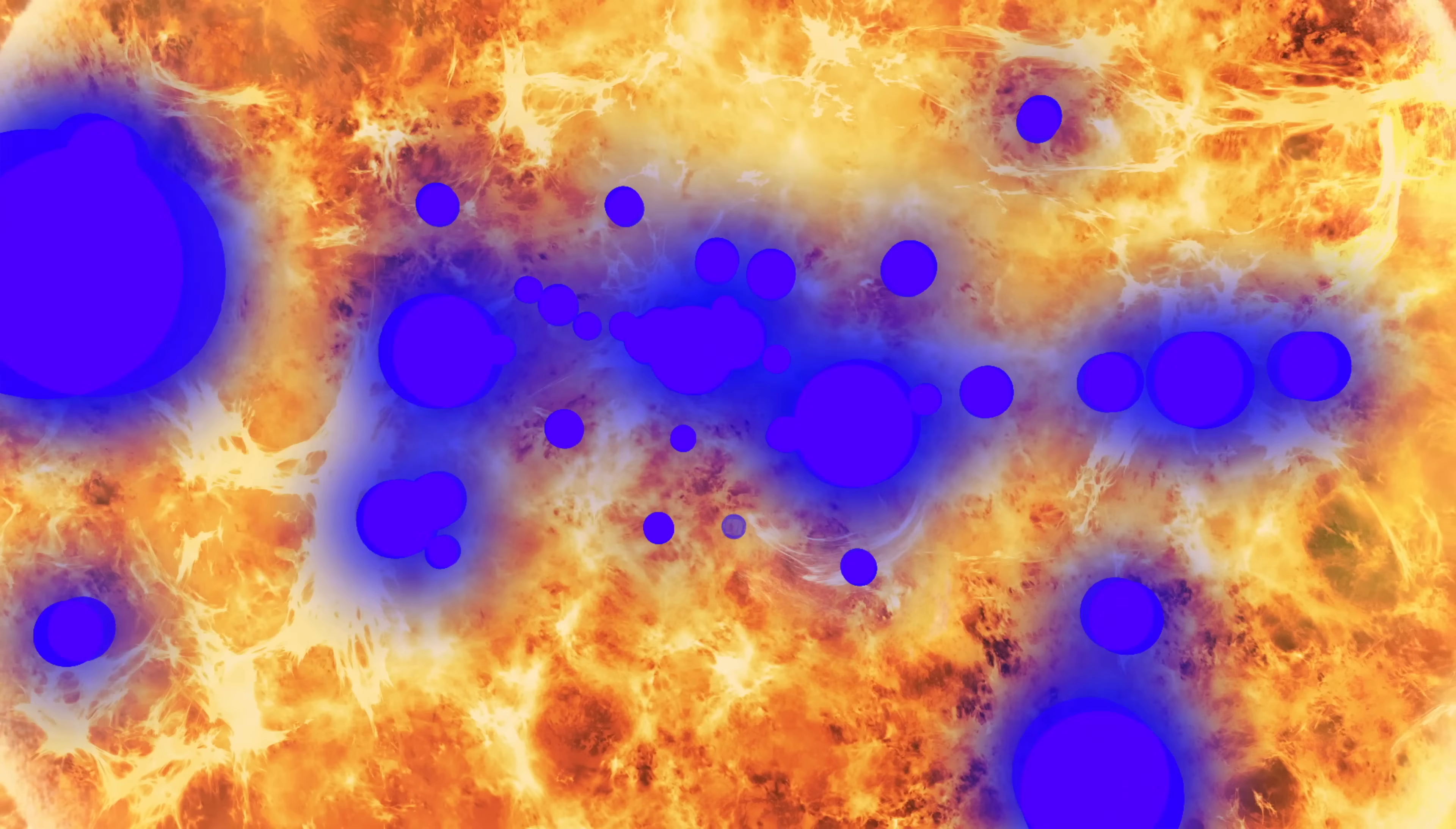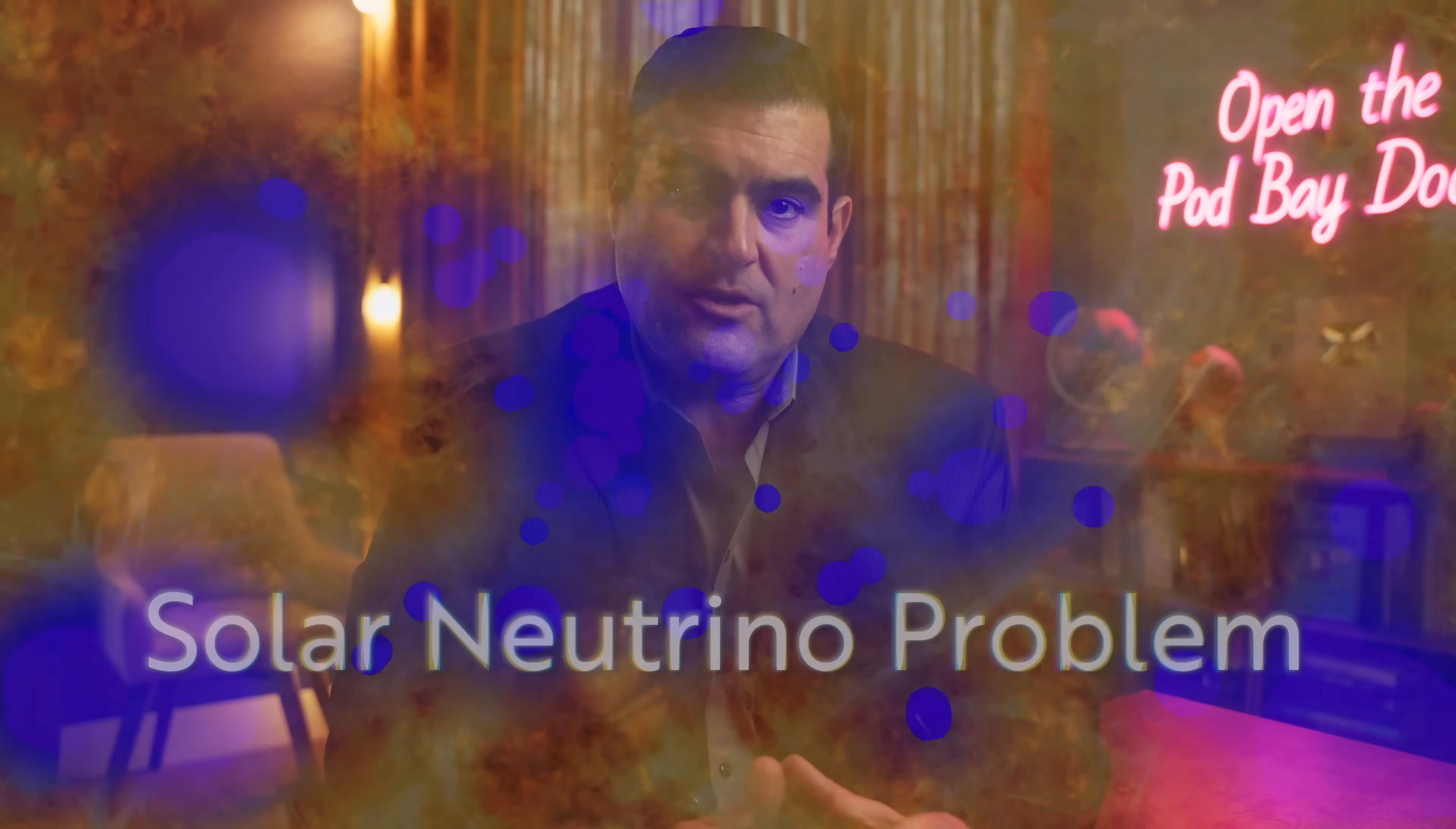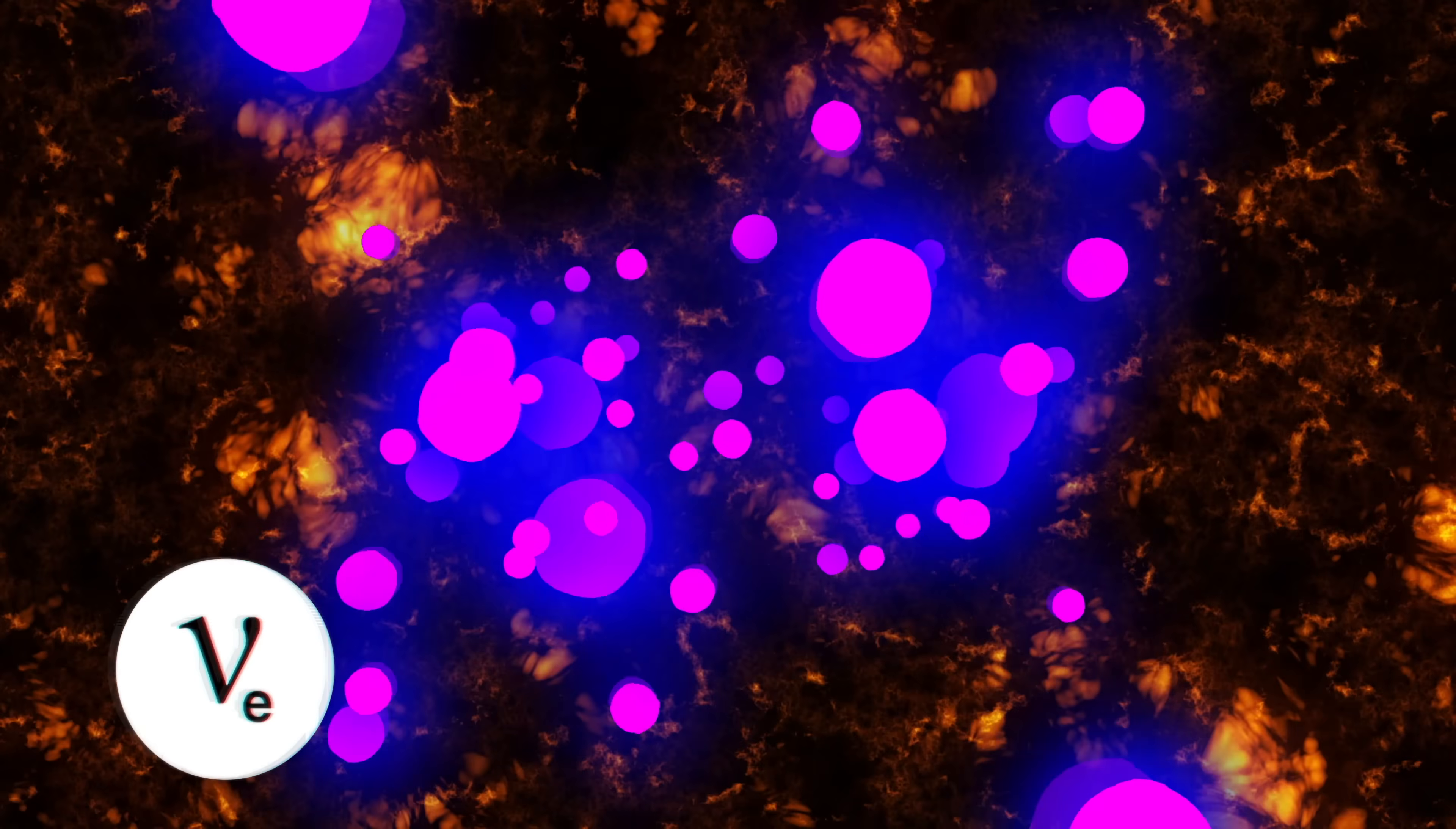This aligned with earlier observations reconfirmed by the Super Kamiokande experiment, where researchers observed fewer electron neutrinos emanating from the Sun, the so-called solar neutrino problem. The missing neutrinos were confirmed to have made it that 93 million mile journey, but during their voyage, they had oscillated to different flavors, leaving only a smaller percentage of the original neutrino flavor able to be detected.